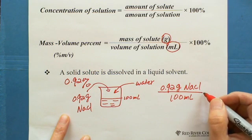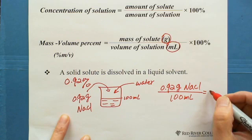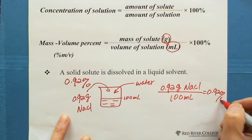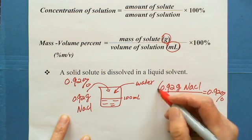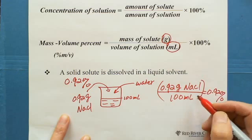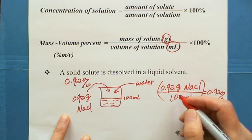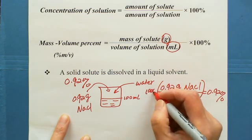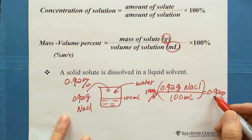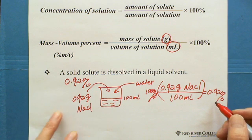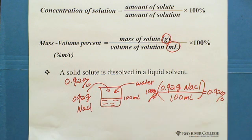So 0.92 grams of sodium chloride, add enough water to make 100 milliliters of solution. This gives us 0.92 percent — because 0.92 divided by 100, times 100%, equals 0.92% sterile saline solution.